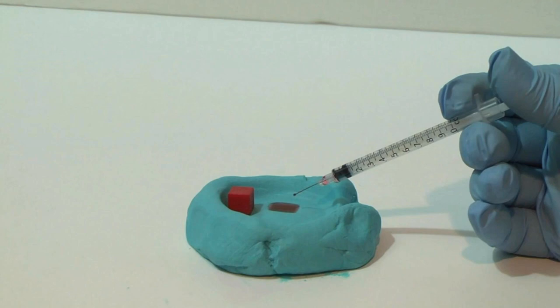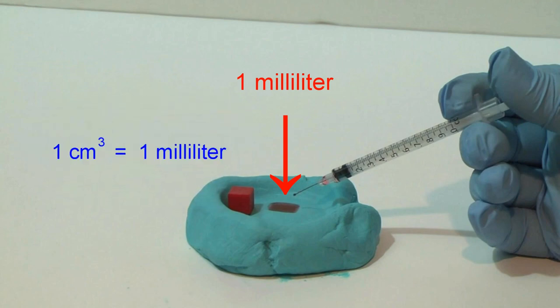So going back to our demonstration, how many milliliters of red water do we have in the depression we made in the Play-Doh? Well, the depression was made with a one cubic centimeter block, and the water has completely filled the volume of that depression. So we must have one milliliter of water, because there is a one-to-one conversion factor between the cubic centimeter and the milliliter.